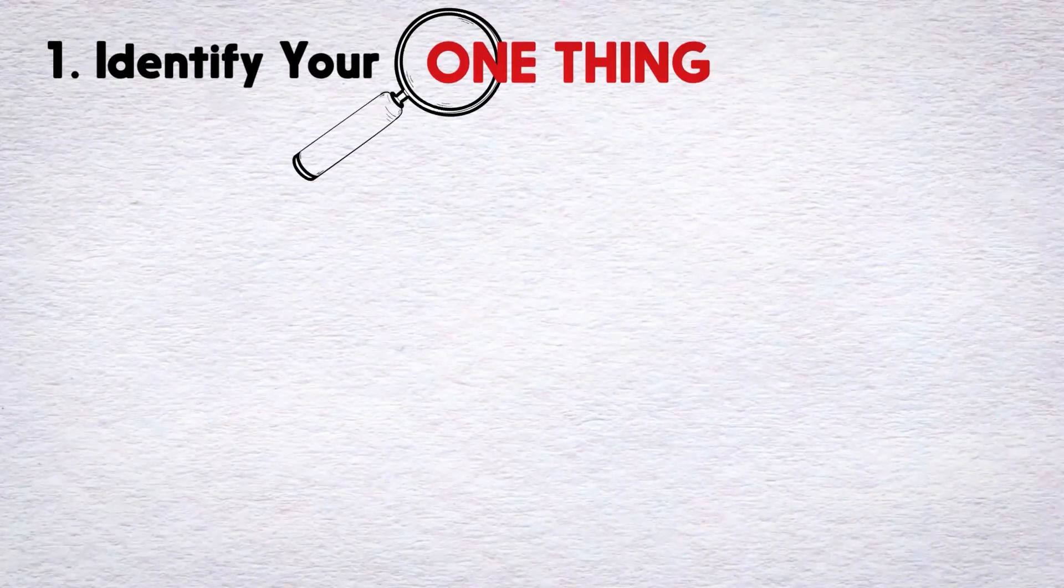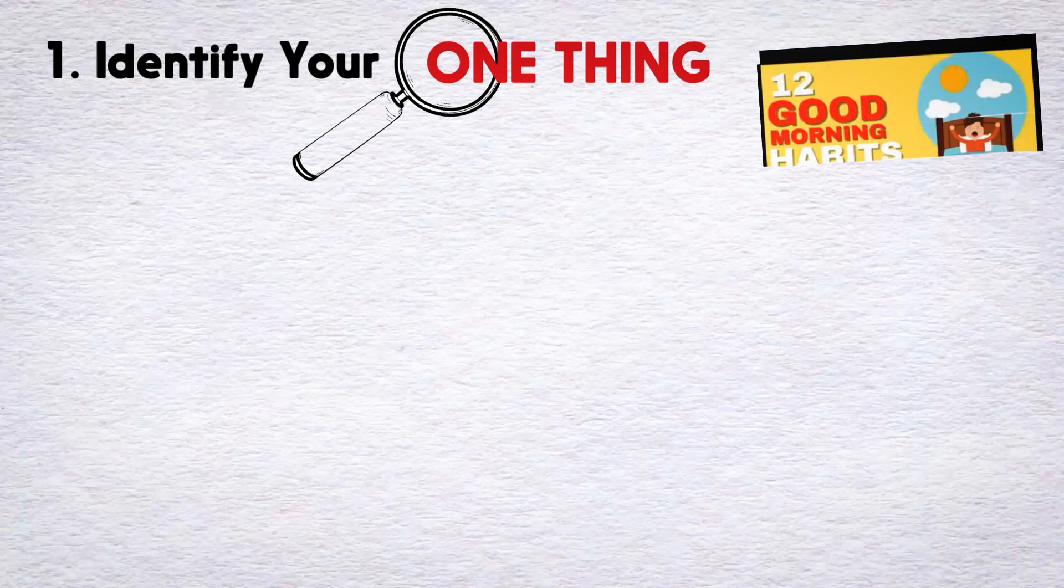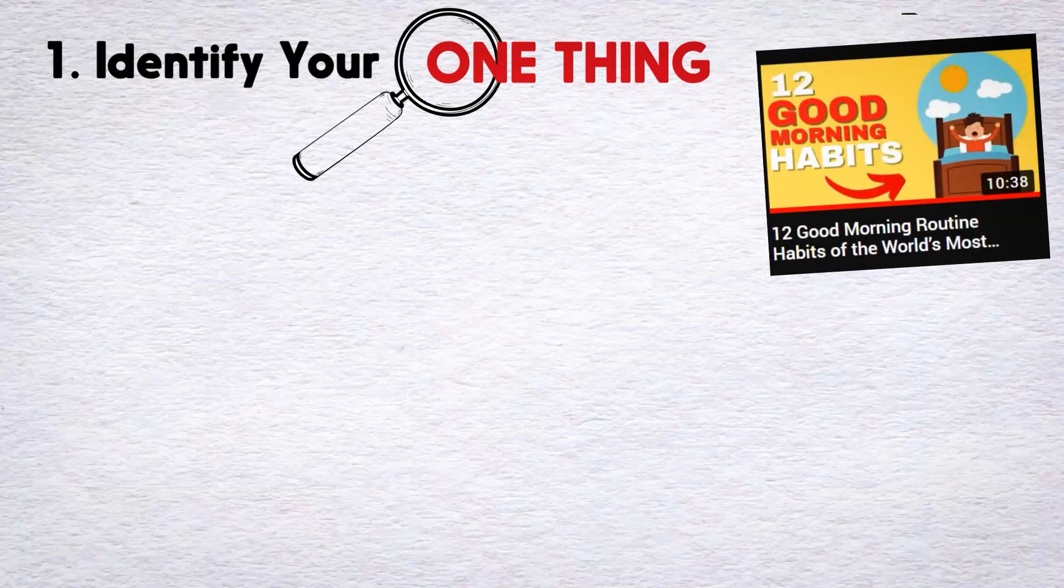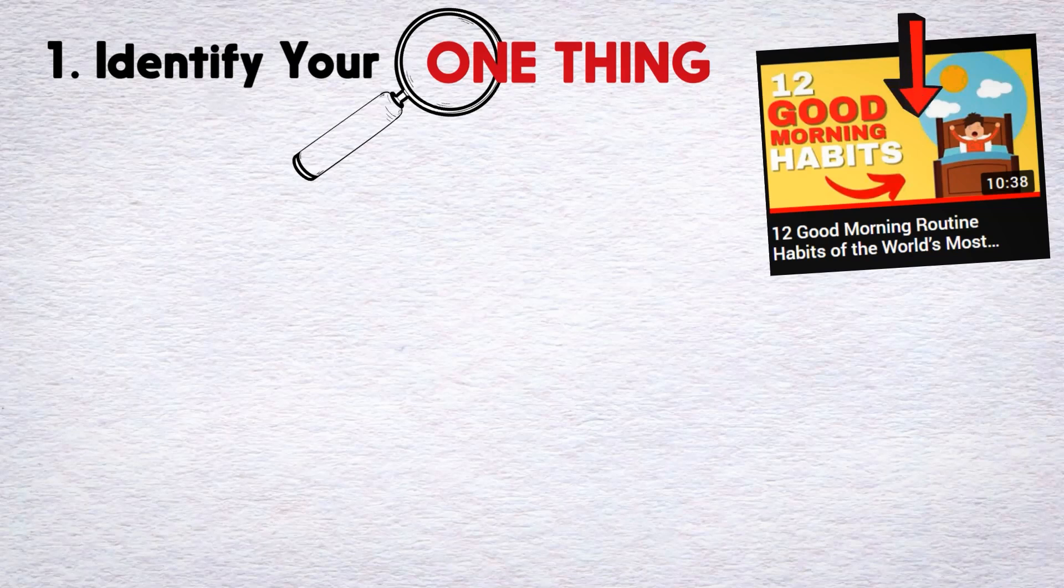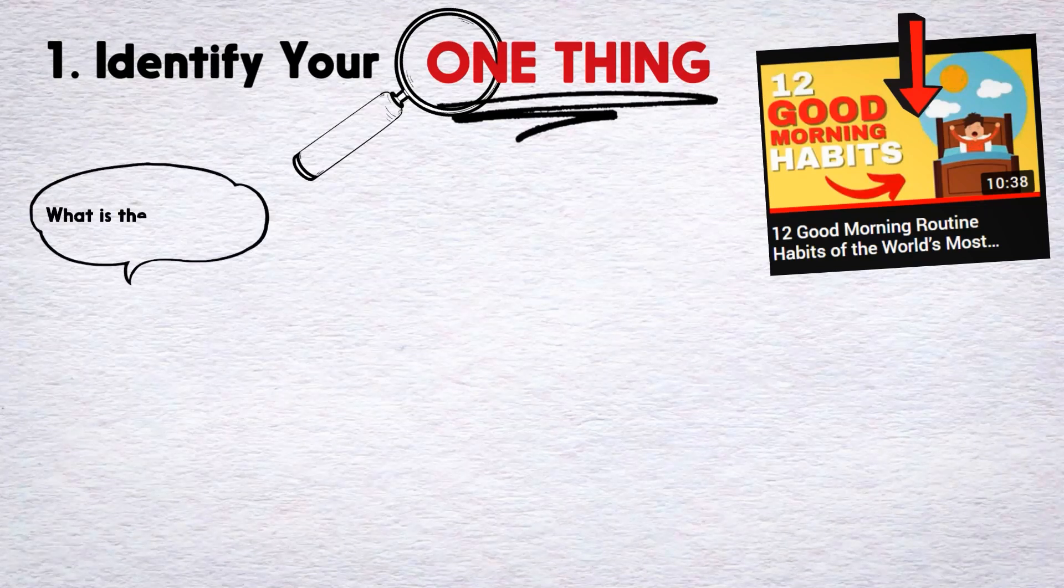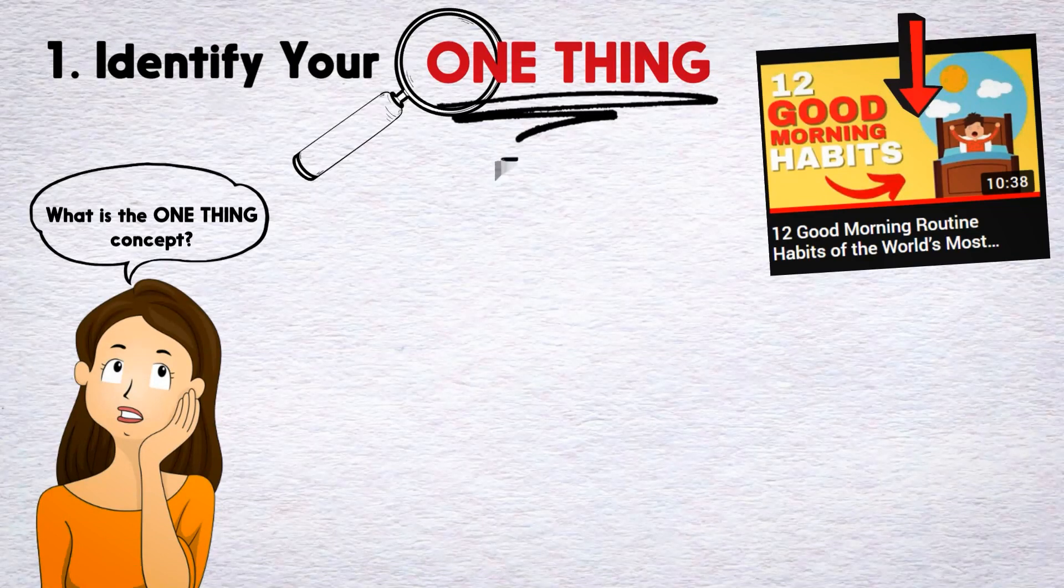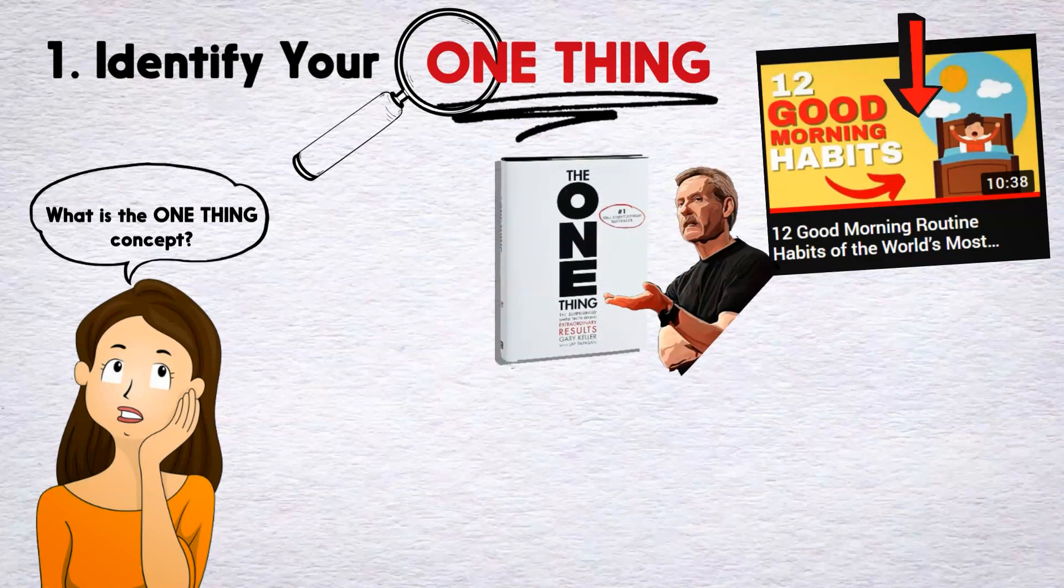Number 1. Identify your one thing. As we discussed in the video on the 12 morning habits of the world's most successful people, the best career habit you can build is to start your workday by working your one thing. So you might wonder, what is this one thing concept? Well, this is a phrase that was popularized in a book called The One Thing by Gary Keller and Jay Papasan.